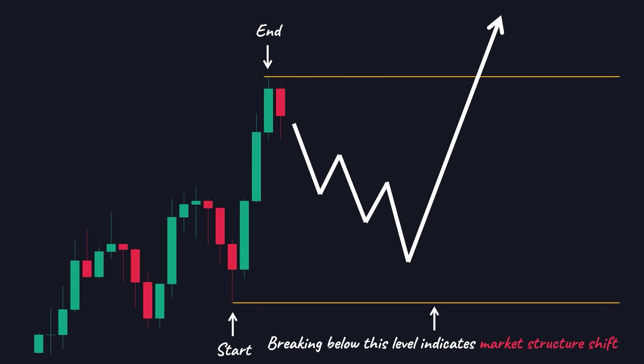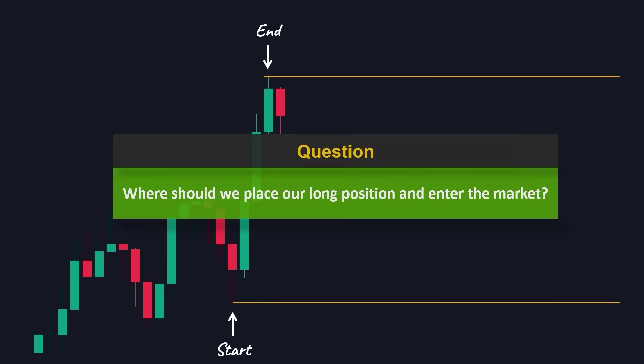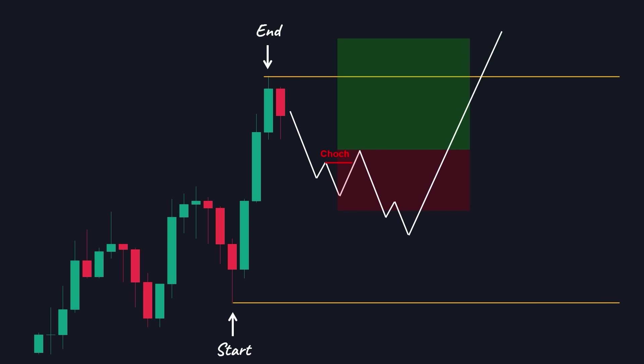If the price breaks below this level, it shows that the buyers are no longer in control, and the whole idea of an uptrend comes into question. It indicates significant bearish momentum and signals a possible reversal, except if it was a fake-out and the market aimed to gather liquidity below this low and then take off. Now, where should we place our long position and enter the market? If we enter too early, the price might make a deeper pullback and we end up losing even though our analysis was correct. On the other hand, if we wait too long, the price might start pushing higher without us entering and we miss the trade. So the whole idea of trading with the dominant trend is to identify the end of the correction, which is the start of the next impulsive movement. But how are we supposed to do that?